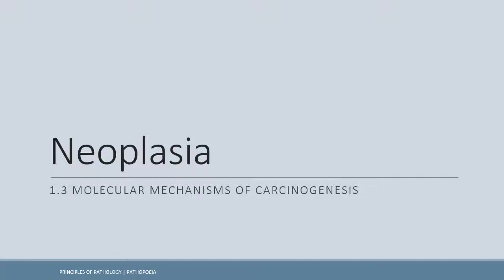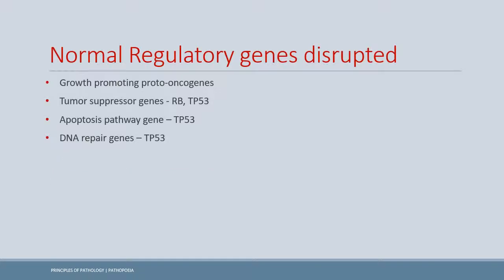In this lecture, we are going to talk about the mechanisms related to carcinogenesis. First, we will go over normal processes that happen in our cells — the systems for prevention of carcinogenesis — and then discuss the molecular mechanisms. The normal regulatory genes present in the body are the proto-oncogenes, the tumor suppressor genes, the apoptosis genes, and the genes causing DNA repair mechanisms.